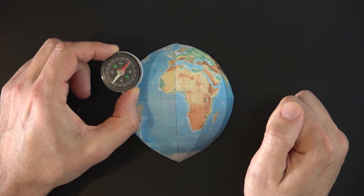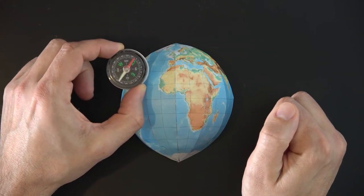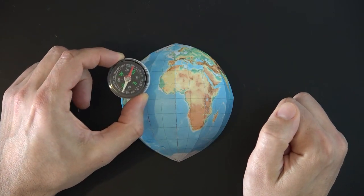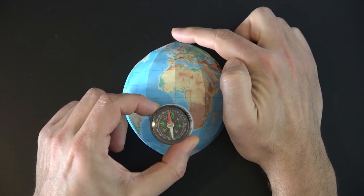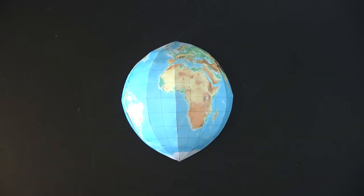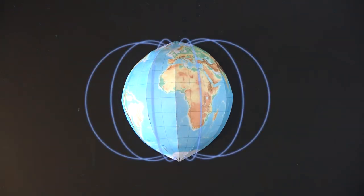And the question, of course, is why is that? Why does the compass always point towards the geographic North Pole? The whole thing is due to the Earth's magnetic field. This is a magnetic force field that surrounds the Earth. And why the Earth has this field, we'll look at afterwards.